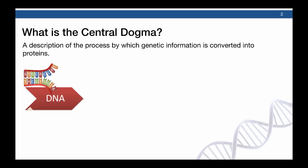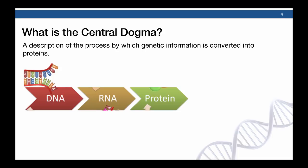The first question we might ask is: what is the central dogma? The central dogma is a description of the process by which genetic information in your DNA is converted into protein. This process involves several steps. We start with DNA, we then go to RNA, and finally we end up at protein.